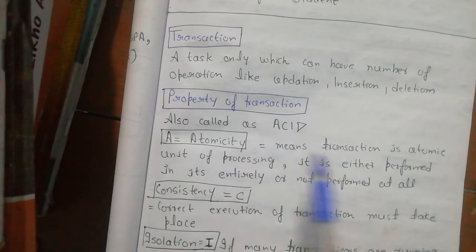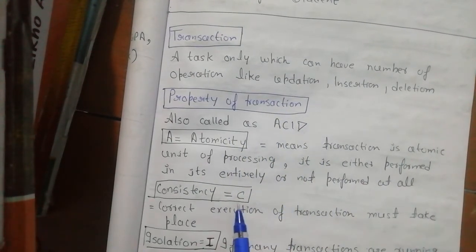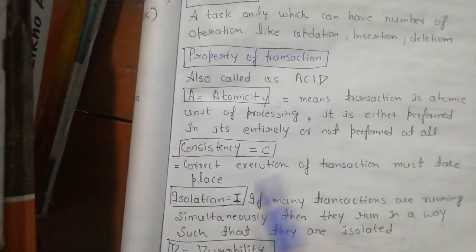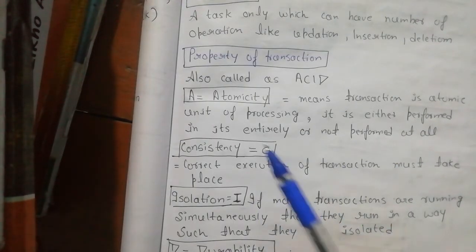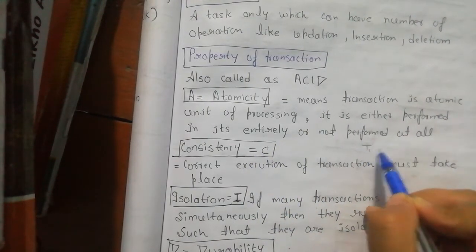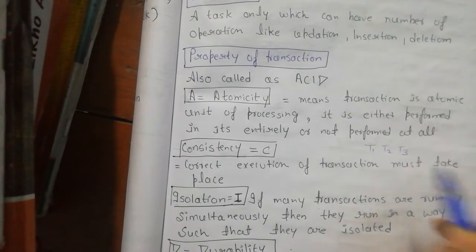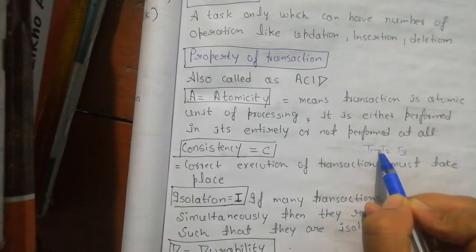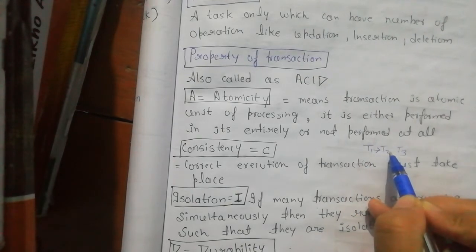What is Consistency? Consistency is correct execution of transaction. If we have three transactions T1, T2, T3, and if we execute T1, after T1, T2 will execute, and after that T3 will execute. They will execute in this way only, not like T3, then T2, then T1.